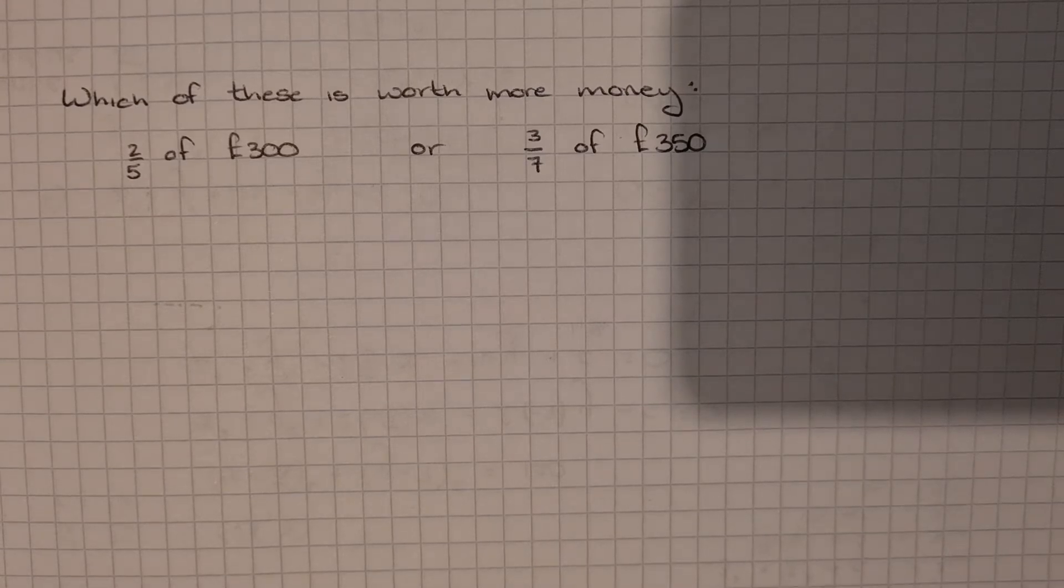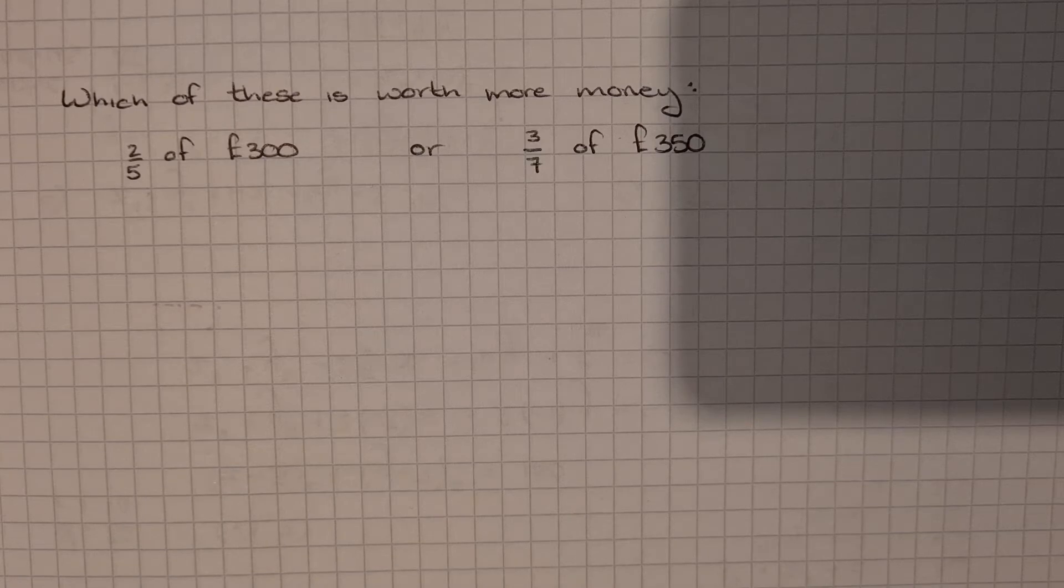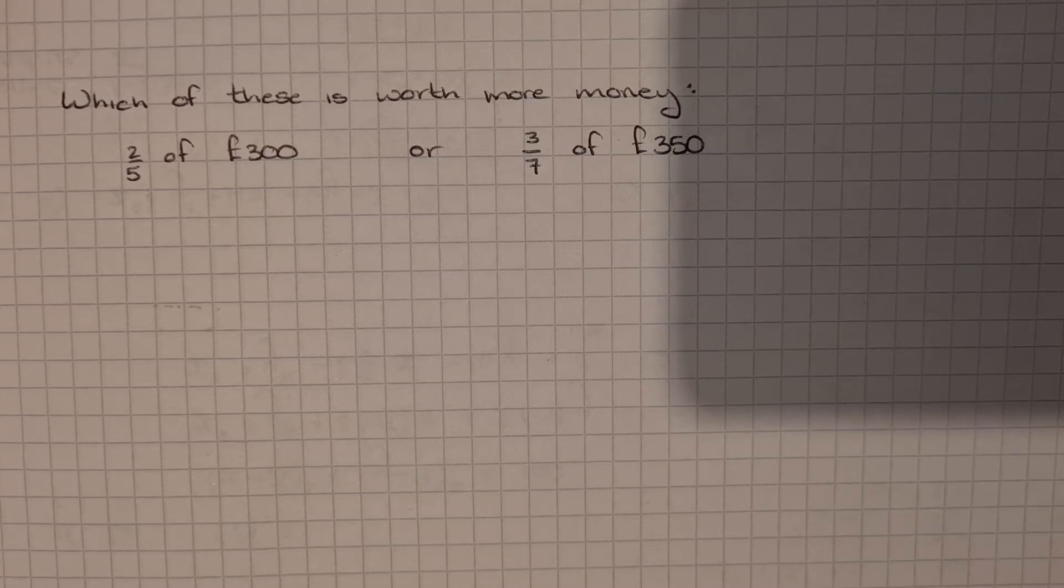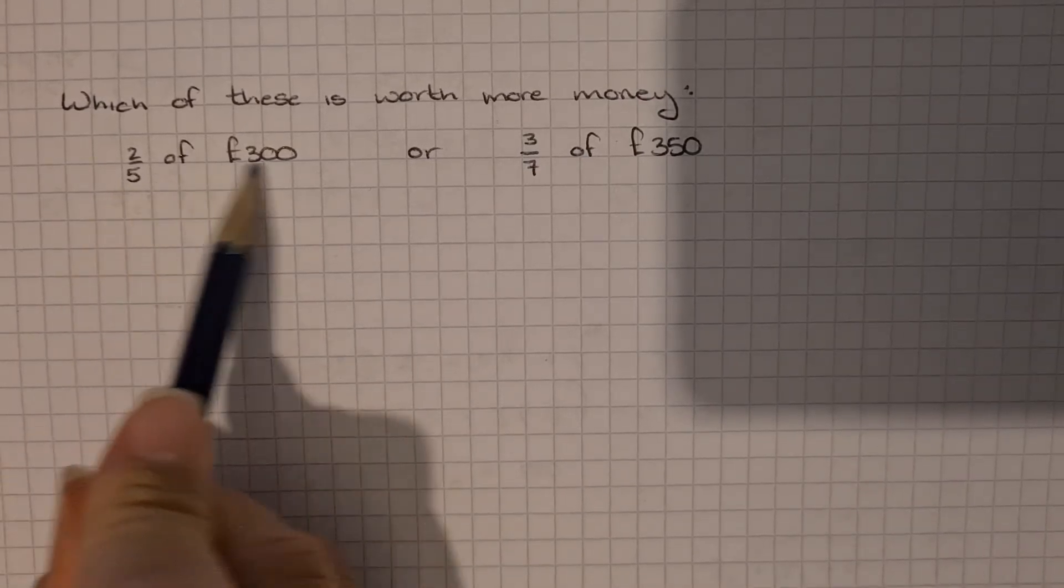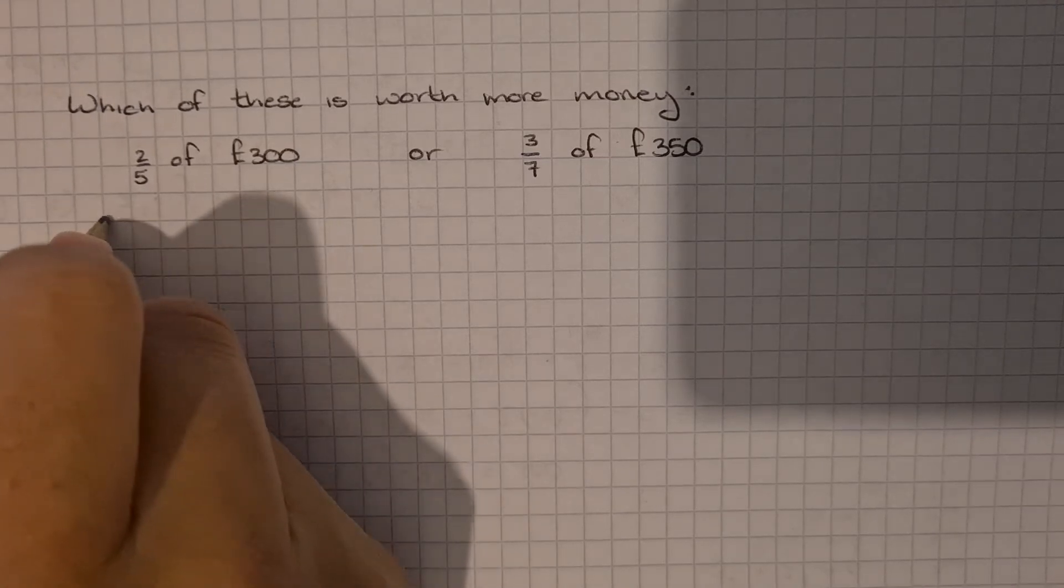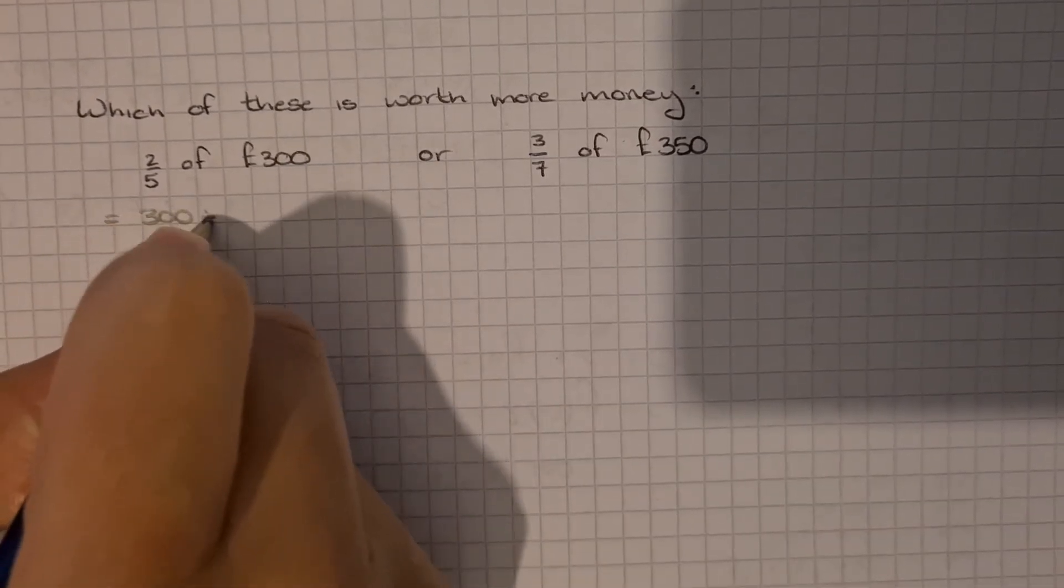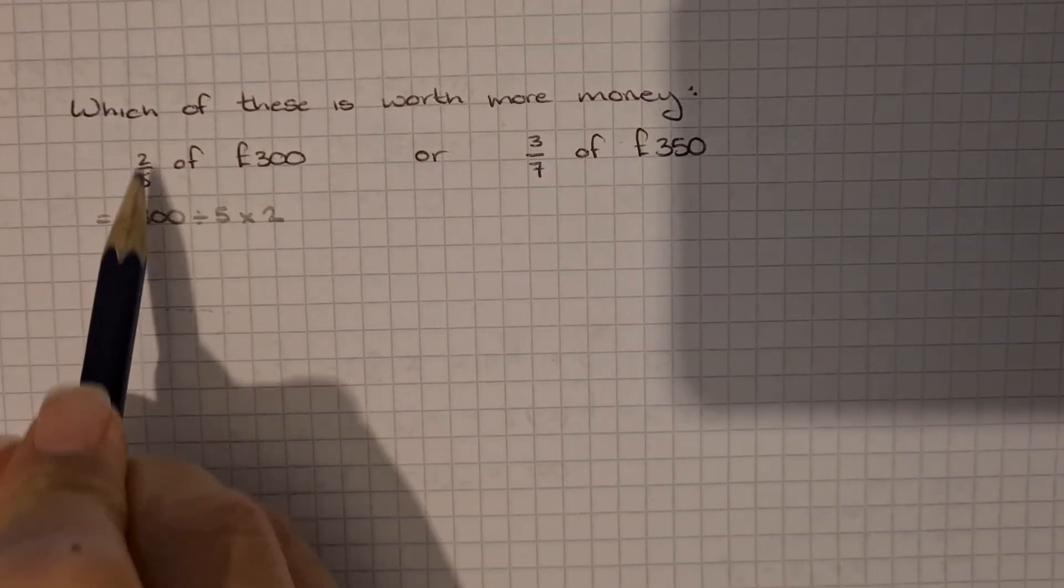Here's a different example. This one says which of these is worth more money? 2 fifths of 300 pounds or 3 sevenths of 350 pounds. So we're going to need to do is work out the answer to each of these and then decide which one is bigger. So let's just do 2 fifths of 300. Using the rule is 300 divided by 5 times by 2 because we divide by the bottom and times by the top.